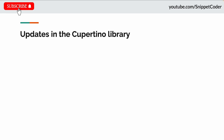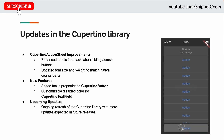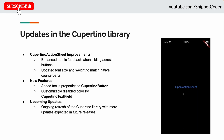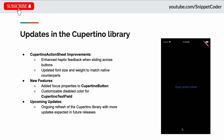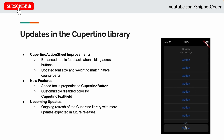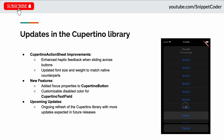The second update is in our Cupertino library, where they have an improvement in the Cupertino action sheet. They have enhanced haptic feedback when sliding across the buttons, and they updated the font size and the way to match native counterparts.